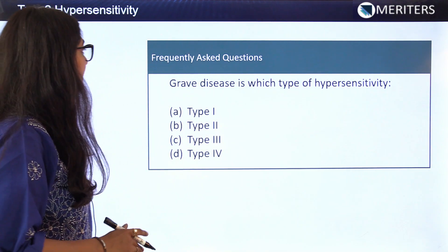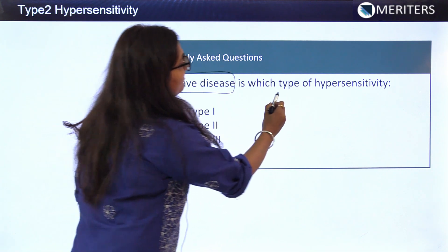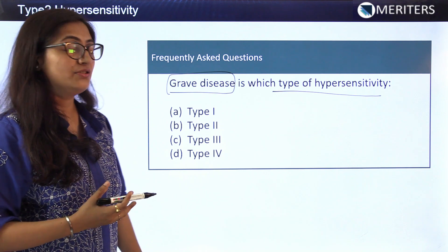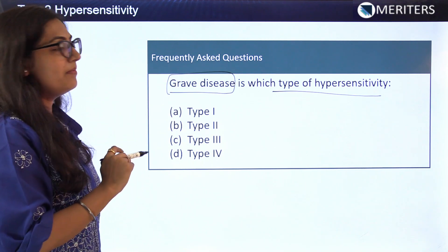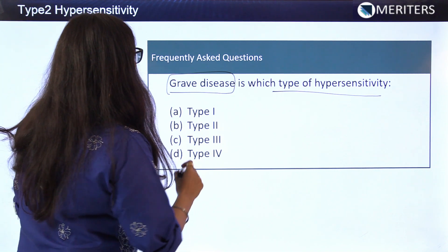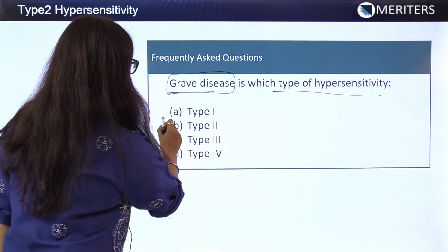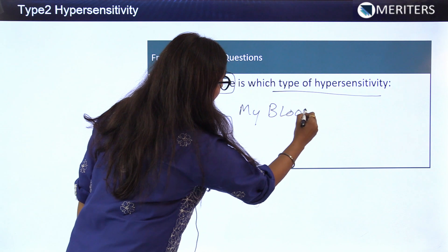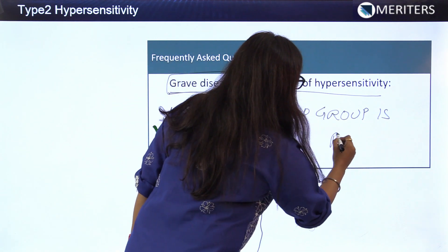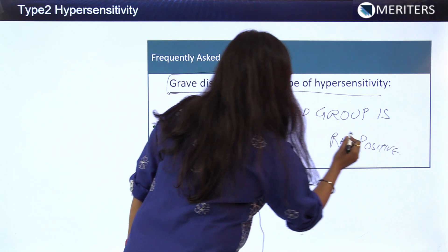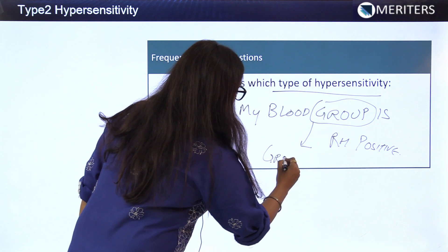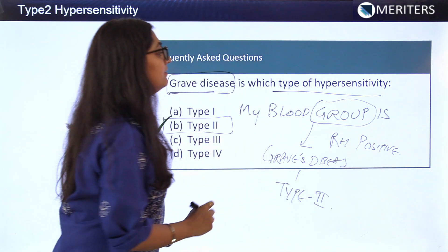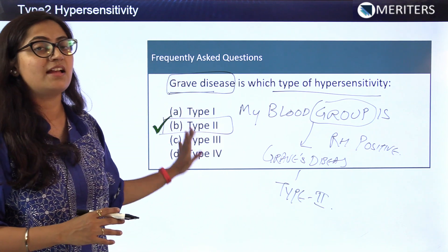Another question: Graves' disease is which type of hypersensitivity? Using the mnemonic 'My blood group is Rh positive,' the letter G in 'group' stands for Graves' disease. Graves' disease is type 2 hypersensitivity. This is how mnemonics can help answer direct questions and score in exams.